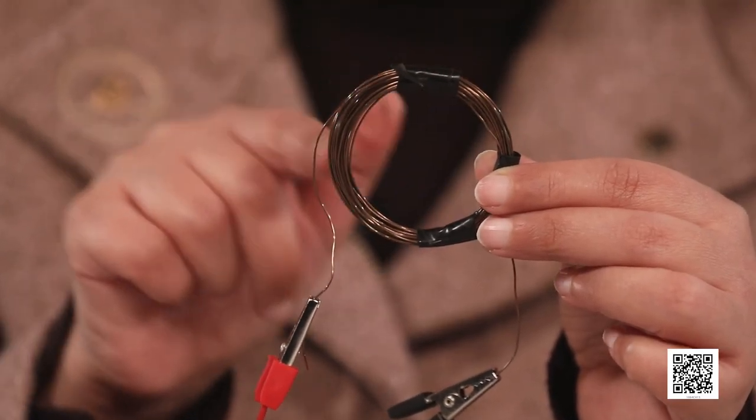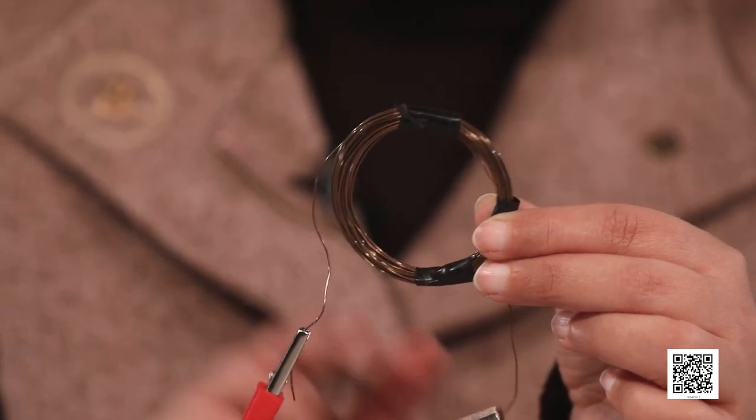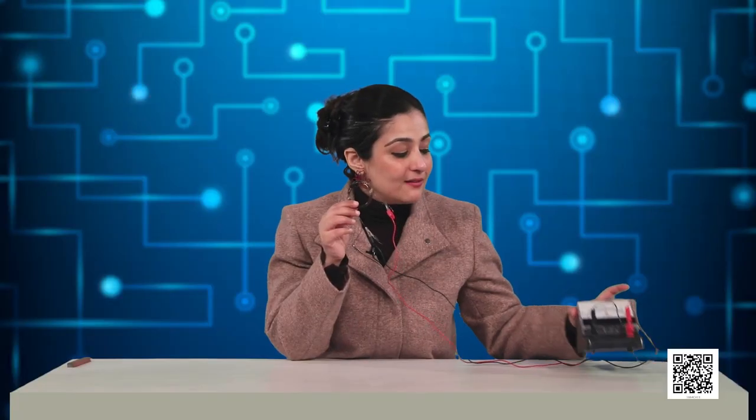We will perform a small activity. I have taken a coil of wire which has a large number of turns. I have connected the ends of the coil using these crocodile clips to a galvanometer. I am going to take a strong bar magnet. The white dot represents the north pole and I am going to move this magnet to and fro towards one end of the coil. Let us see what happens.